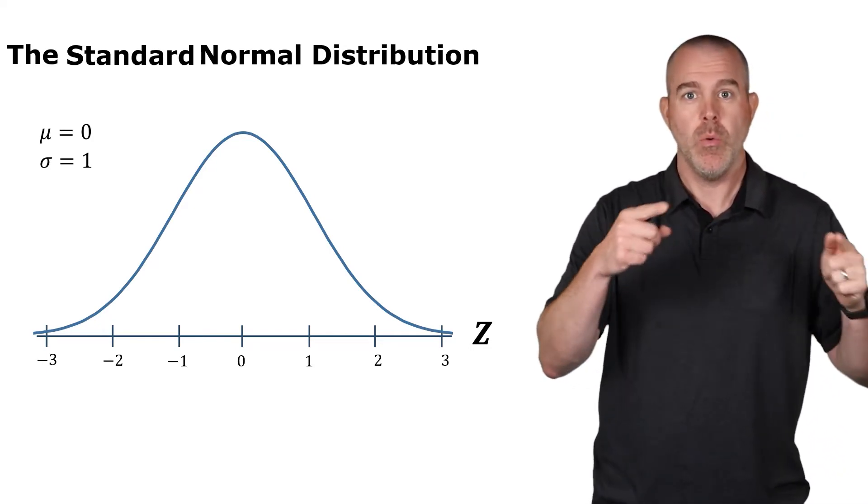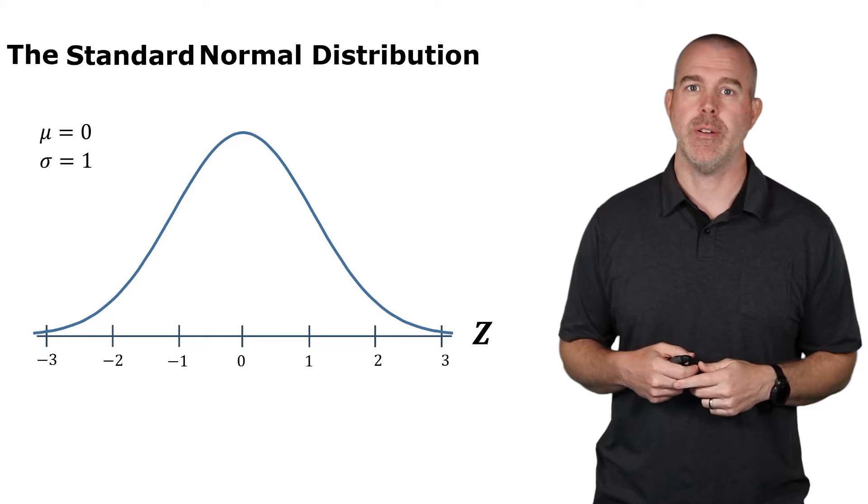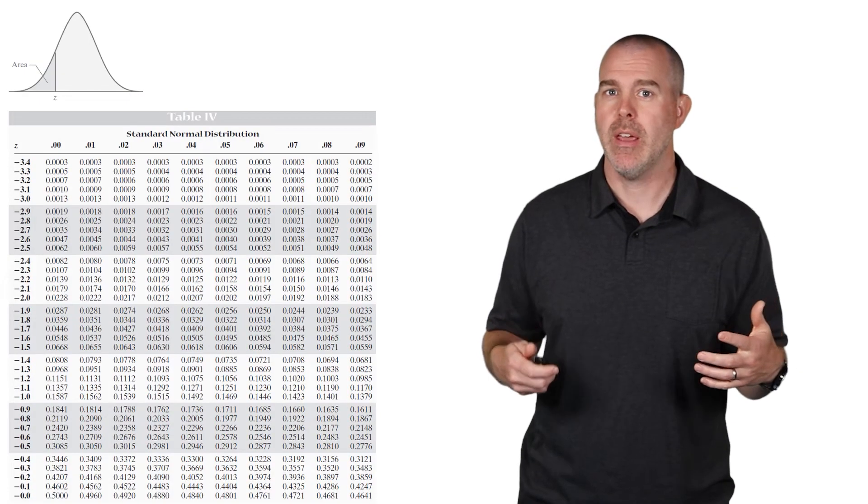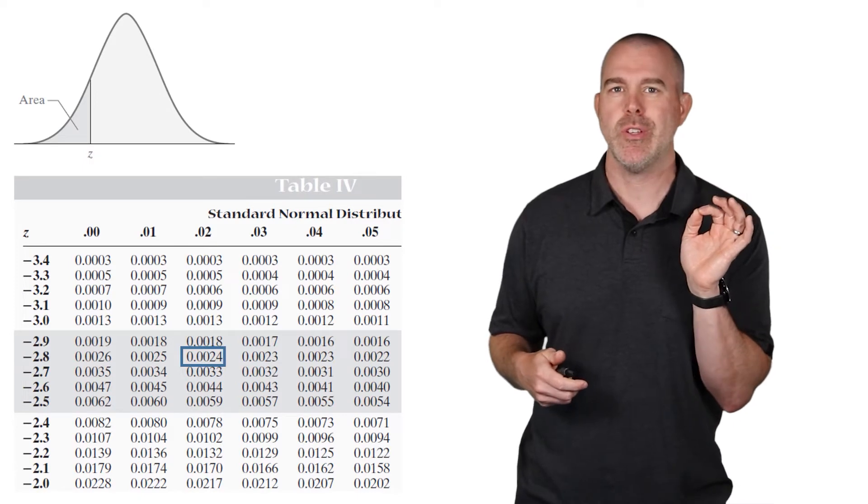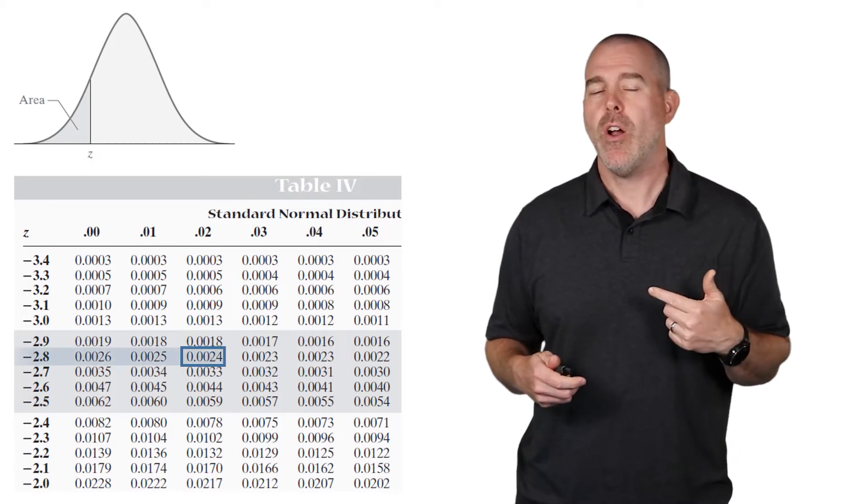So if z represents number of standard deviations, on the standard normal distribution, the mean is zero standard deviations from the mean. So that's zero, and then one, two, three, et cetera. How do we use this table then? Well, if we zoom in and look at a particular number, here's this 0.0024.